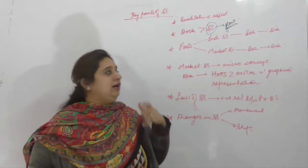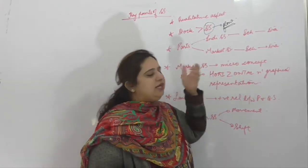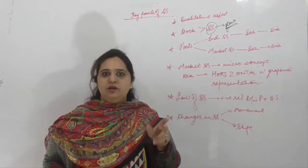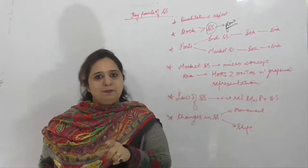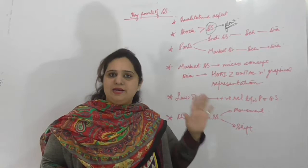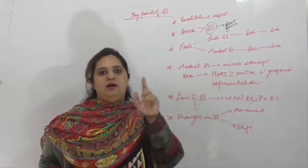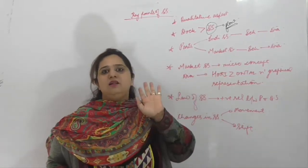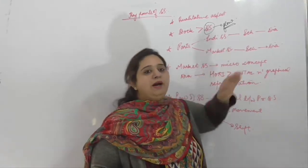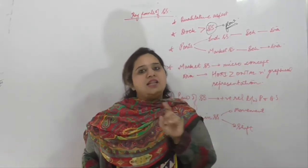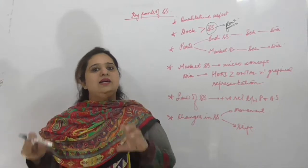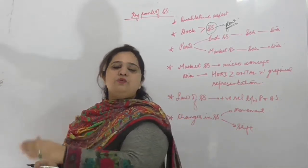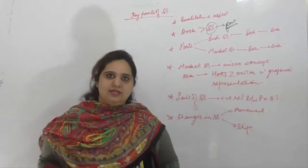Individual supply curve भी पता होना चाहिए। Schedule एक table है — यह express करता है relations किसके बीच में? Quantity supplied at different levels of prices. अगर individual है तो एक single firm, अगर market है तो by all the firms — और साथ में assumption: there are only two producing firms in the market।